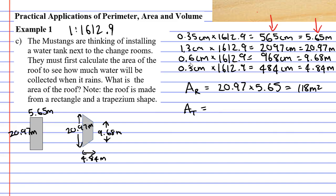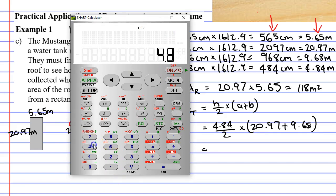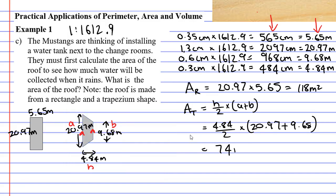Now the area of the trapezium, which is a little trickier, we've got to use our formula: h over 2 times a plus b. When you look at your trapezium, you'll have two sides that are parallel. The two parallel sides represent your a and your b, and the h, or the height, is the height between the two parallel sides. h is 4.84 over 2 times a plus b, so a is 20.97 and b is 9.68. 4.84 divided by 2 times bracket 20.97 plus 9.68 equals, rounded to 74 metres squared.